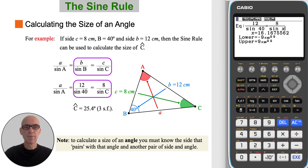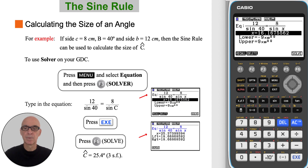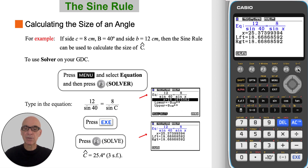In this example, the sine rule can be used to calculate the size of angle C. To calculate the size of an angle, you must know the side that pairs with that angle, as well as another pair of side and angle. Again, you can use Solver on your calculator to solve the equation. Typing in the equation and pressing F6 to solve gives angle C equal to 25.4 degrees, correct to three significant figures.